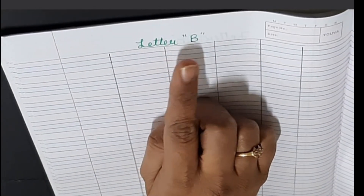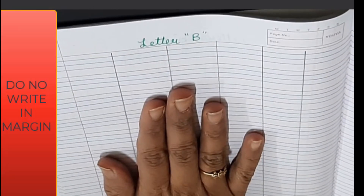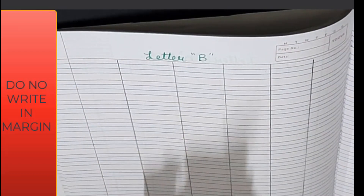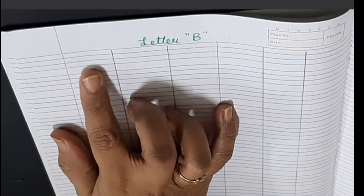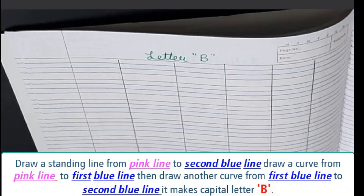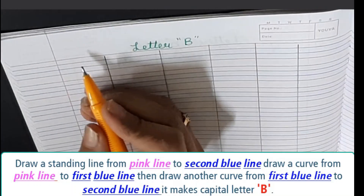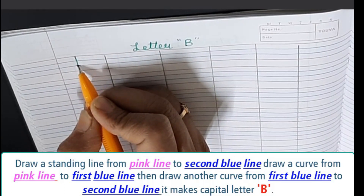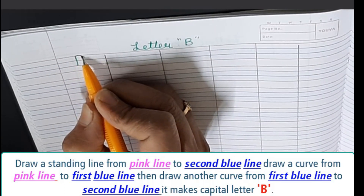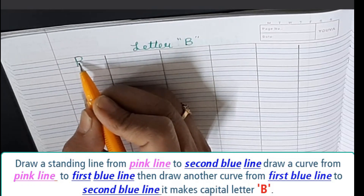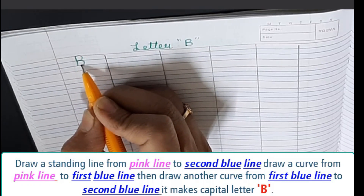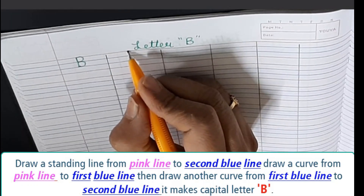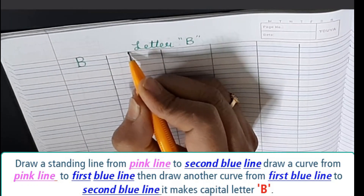Now we will write in notebook letter B. This is the margin; we will not write in the margin. Draw a standing line from pink line to second blue line, draw a curve from pink line to first blue line, then draw another curve from first blue line to second blue line. It makes capital letter B.